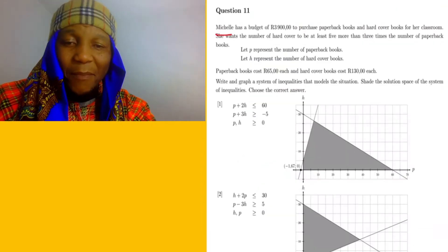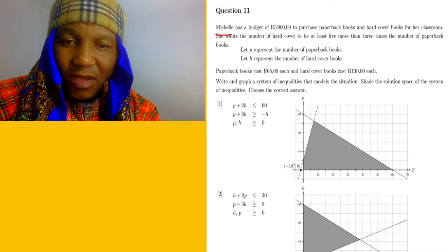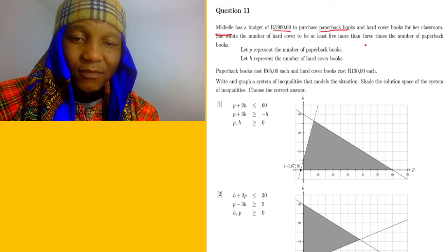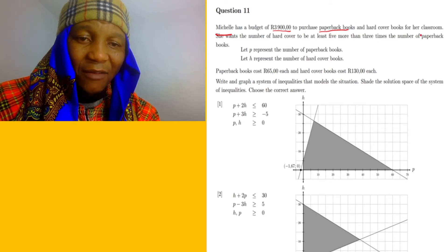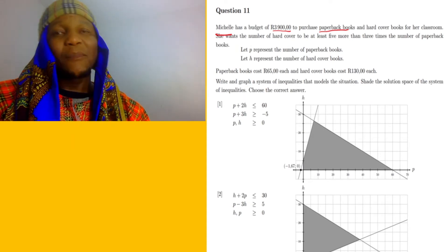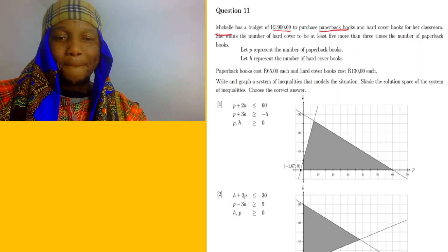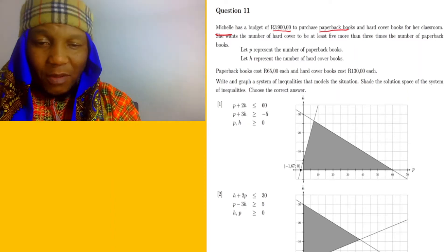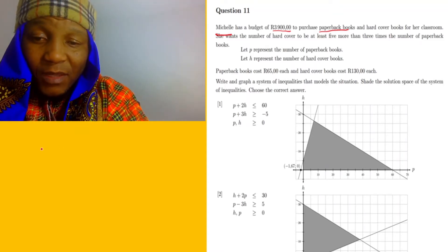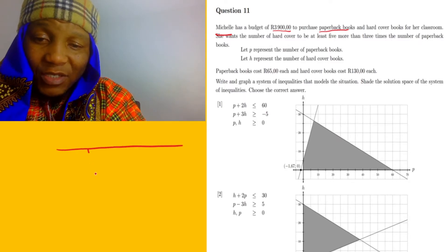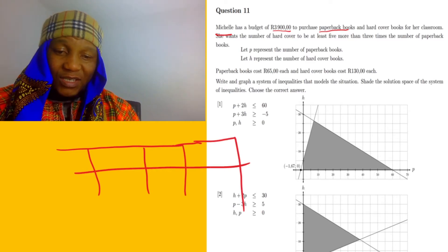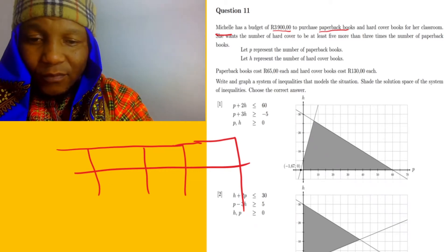So they gave us a budget question. She wants to purchase two things: paper bags — paper books — in hardcover. Let me show you how to do this type of constraint question. I'm gonna show you how to set up a little table. You draw a little table because this is what you need for this type of question.